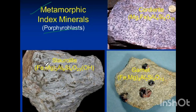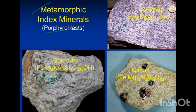The metamorphic index mineral, or the porphyroblast of staurolite — see these darker brown colored ones — these are the staurolite. And this is the cordierite, this green dark one is cordierite, and this is the garnet porphyroblast, the bigger one. These are the metamorphic index minerals.